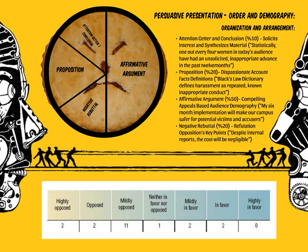In their affirmative argument, they specifically state: 'My six-month implementation will make our campus safer for potential victims and accusers.' In other words, they're going to lay out why the audience should agree with them. And then their negative rebuttal: 'Despite internal reports, the cost will be negligible.' So they've anticipated that a common negative criticism of their implementation is going to be its cost. They've decided to go ahead and speak to that counter-argument ahead of time, so that their audience will be inoculated to it, should they ever encounter it in the future.